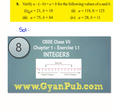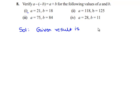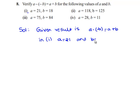We'll see the 8th problem. The question is: verify that a minus of minus b is equals to a plus b for the following values of a and b. We'll see the first bit. Given result is a minus of minus b is equals to a plus b. In the first bit, the values given are a is equals to 21 and b is equals to 18.